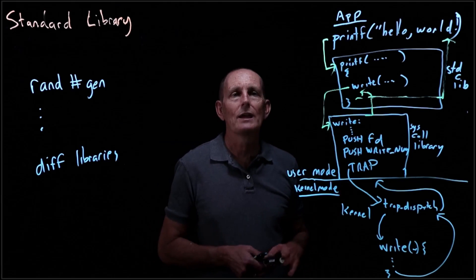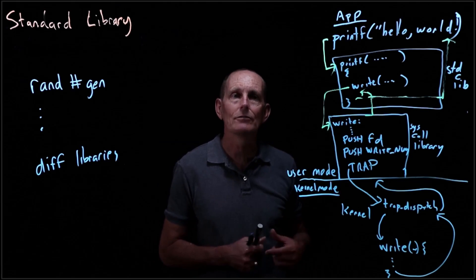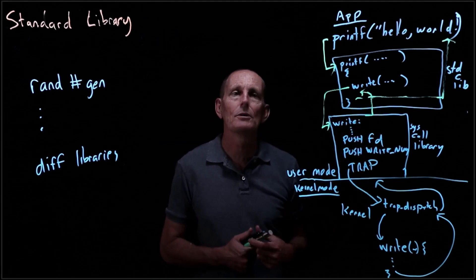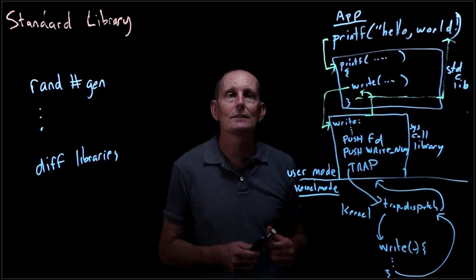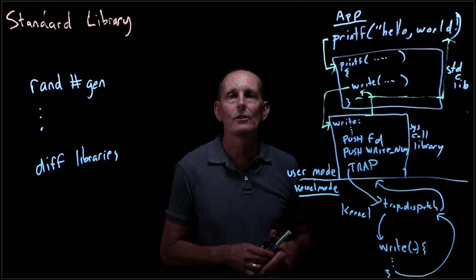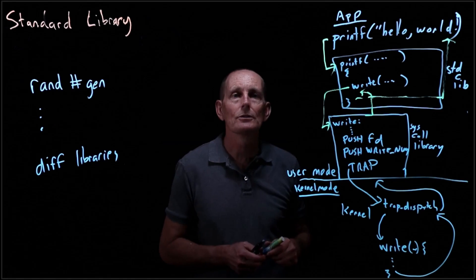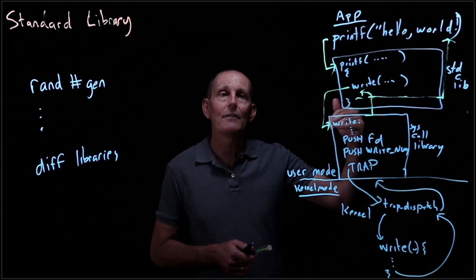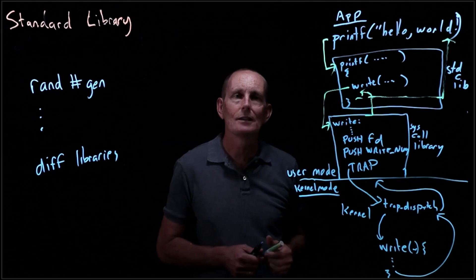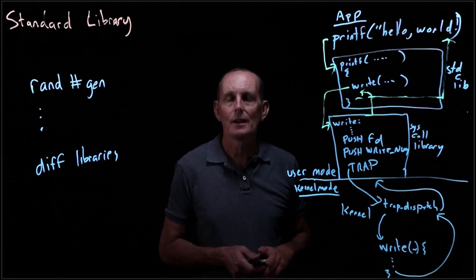We'll talk later about why we have these libraries — why would an application not want to just call write itself? Part of the reason might be buffering. This going back and forth from user mode to kernel mode — that is, making a system call — can be relatively expensive; it can cost hundreds of instructions. So you might want to minimize how many system calls you make. For instance, if I call printf hello world and then make another printf after that, it's not necessarily going to call write for every printf. Instead, it'll be buffered and only call write when the buffer gets filled. That is it for the standard library.